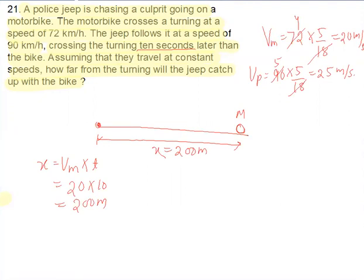Now at this instant, this one is the position of police jeep. So police jeep moves with 25 meter per second and motorbike moves at 20 meter per second.